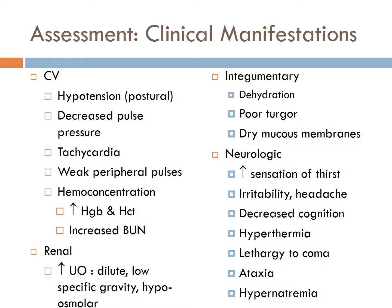Most of the manifestations of DI are related to dehydration. The key manifestations are an increase in the frequency of urination and excessive thirst. Urine output may be 4–20 liters per day or about 200 ml per hour. The patient can go into hypovolemic shock. Although increased fluid intake prevents serious dehydration, a patient deprived of fluids or unable to increase oral intake may develop shock from fluid loss. Watch for manifestations of dehydration such as poor skin turgor and dry or cracked mucous membranes.